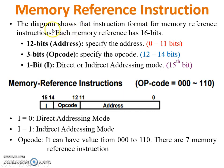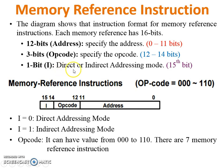First one: Memory Reference Instruction. The diagram shows the instruction format for Memory Reference instruction. Each memory reference has 16 bits, from 0 to 15. The first 12 bits, 0 to 11, specify the address. The next 3 bits from 12 to 14 denote the opcode. The last bit, bit 15, is 'i', which means direct or indirect addressing mode. When i equals 0, it denotes direct addressing mode; when i equals 1, it denotes indirect addressing mode.